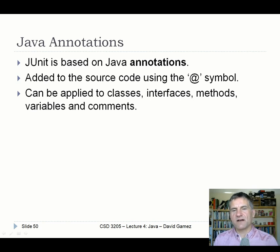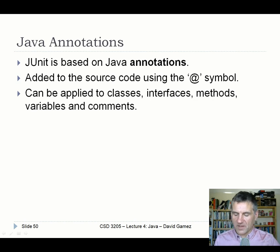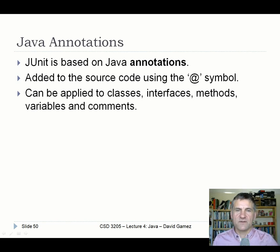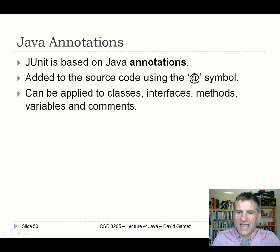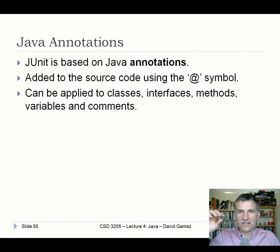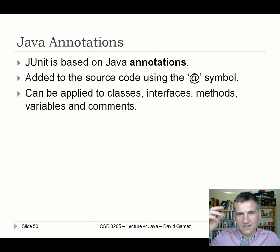JUnit is based on Java annotations, and a lot of the more advanced Java frameworks are also based on annotations - including Javadoc, Spring, Hibernate, and the Java Messaging Service. It's a big thing in Java. To use annotations, you use the at symbol, and it goes outside the method declaration - it's in the code but doesn't have a functional role. It's more like a smart comment that tells the framework that this method is a unit testing method, for example. We can apply annotations to classes, interfaces, methods, variables, and comments.